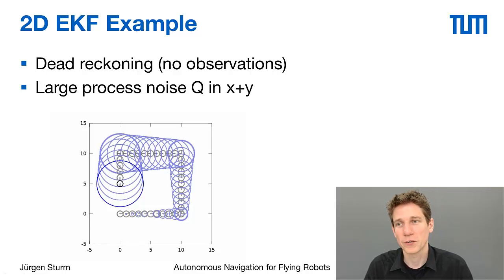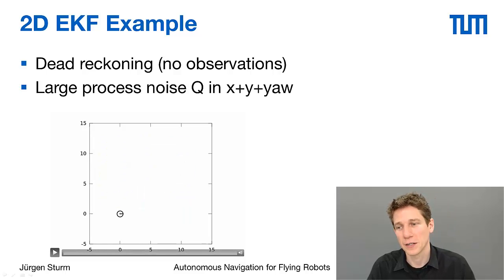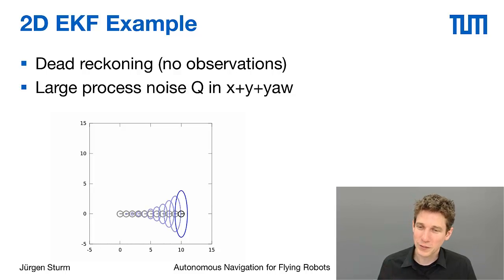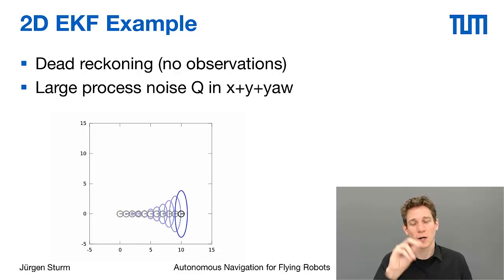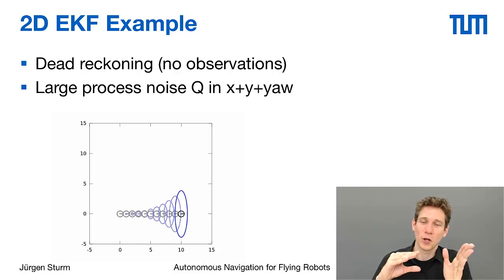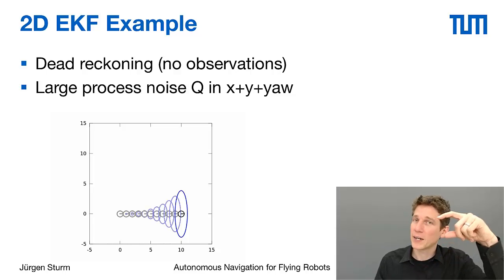We now additionally assume noise in the heading estimate. The difference is that the uncertainty in the y direction increases dramatically. The robot has the same x-y process noise, but the new uncertainty comes from being uncertain about its current heading — it doesn't know whether it is still pointing right or has turned slightly. If it moves forward while uncertain about heading, this leads to a different position along y, which is why the ellipse grows much more in the y direction than in x.